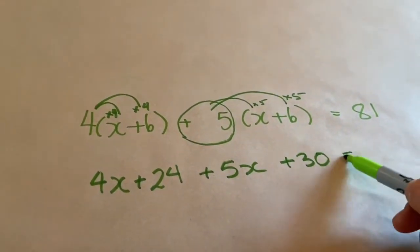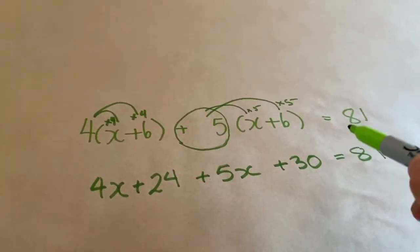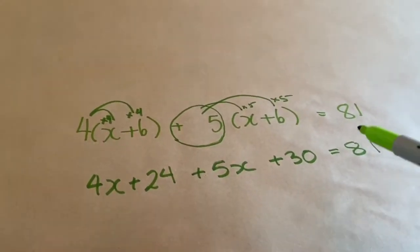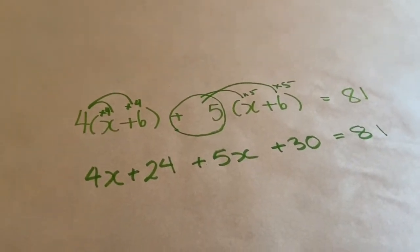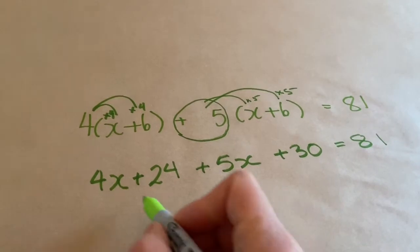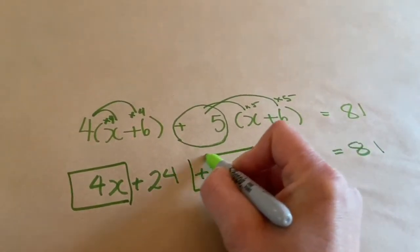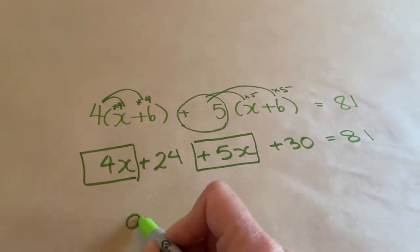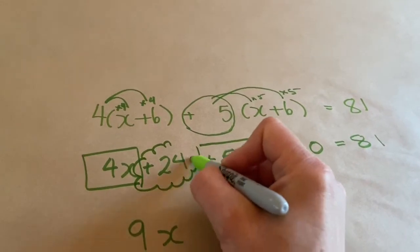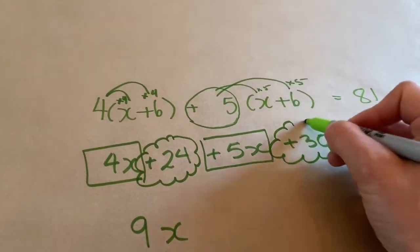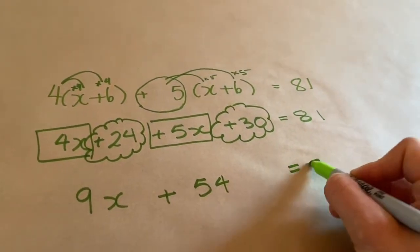Now I can worry about collecting the like terms. I can't solve the equation until I have combined like terms and simplified. So I want to put this 4x together with this plus 5x, which means I have 9x. And I want to put this plus 24 together with this plus 30, which means I have plus 54 equals 81.